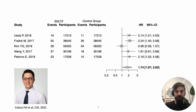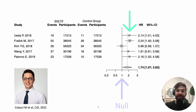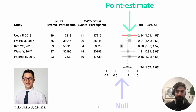Another example: this is a forest plot from a meta-analysis led by Dr. Mike Kalachi. This is the line of unity or null line, and each individual study has a point estimate — like 2.14 — and then the 95% confidence intervals thereafter.